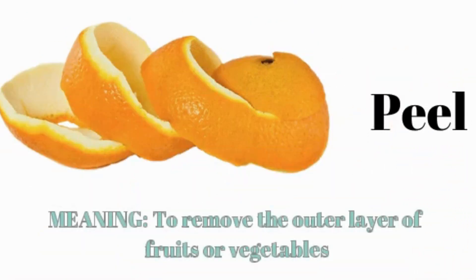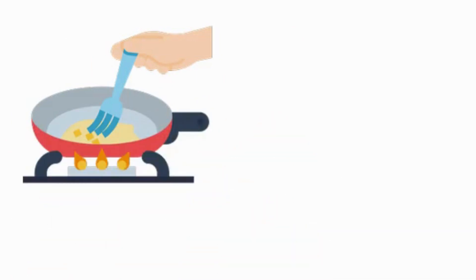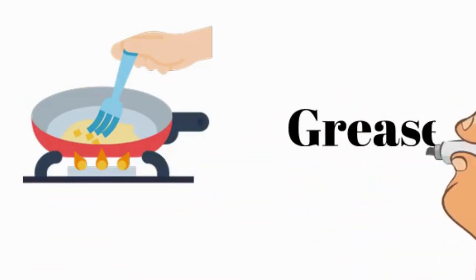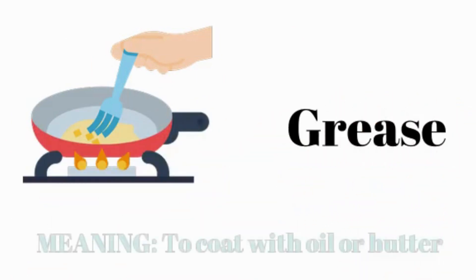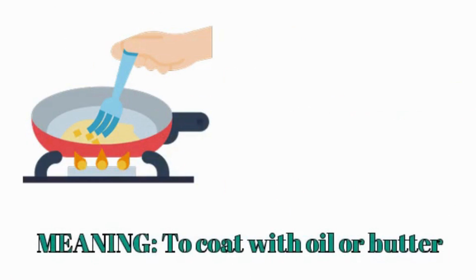Peel: meaning to remove the outer layer of fruits or vegetables. Grease: meaning to coat with oil or butter.